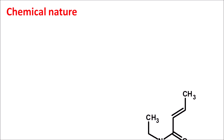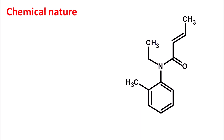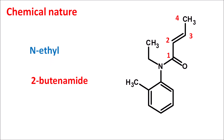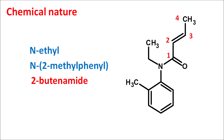Now let us see the chemical nature of crotamitone. Looking at the structure, we can observe the amide. Giving the numbering — 1, 2, 3, 4 — this is the amide formed by crotonic acid, and we can write this as 2-butenamide. To the nitrogen, one group is ethyl (N-ethyl) and the second group is N-2-methylphenyl. That is the complete IUPAC name of crotamitone.